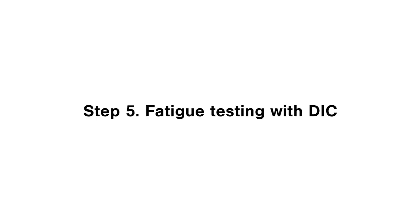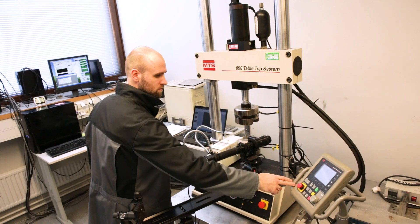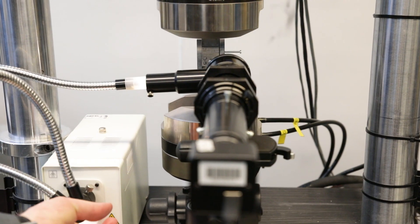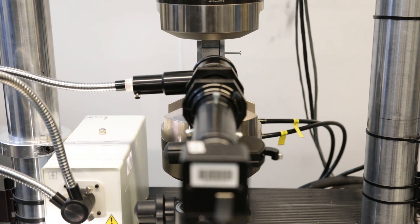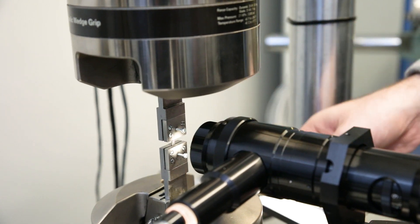Step 5: Fatigue testing with digital image correlation. Run the fatigue testing and synchronization with the image recording system. The fatigue testing continues while the crack length approaches a critical value or plastic deformation starts to dominate.